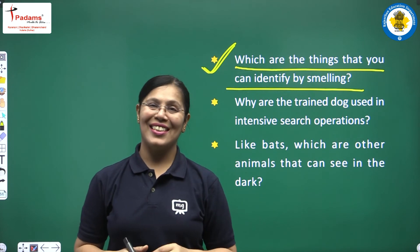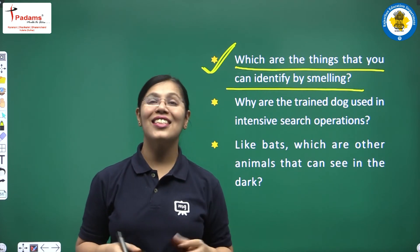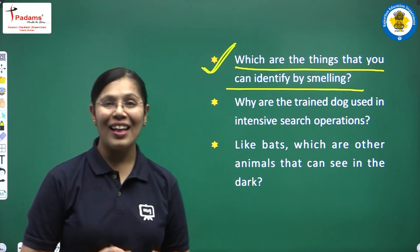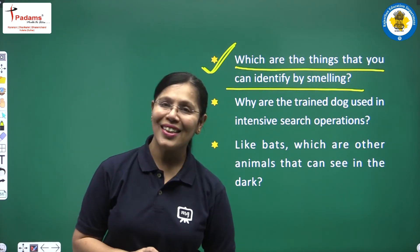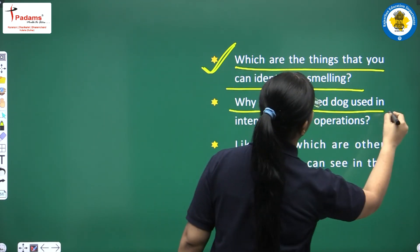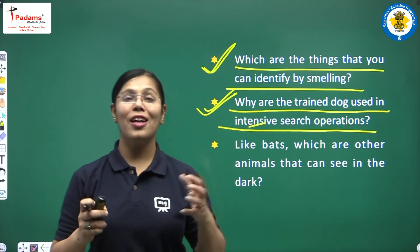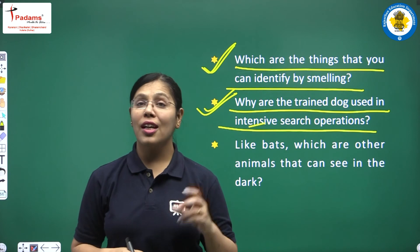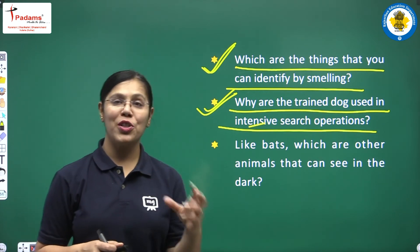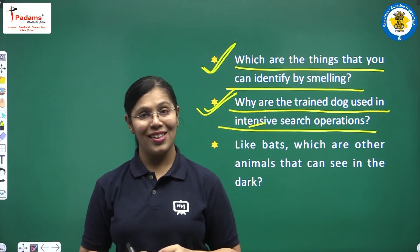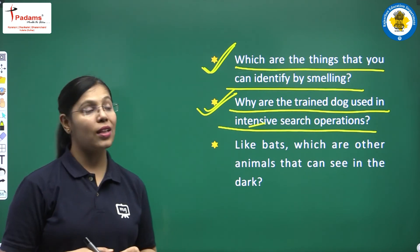The second question is: dogs are used in intensive search operations. Why do police officers use dogs when they search? Try to find out and discuss it.